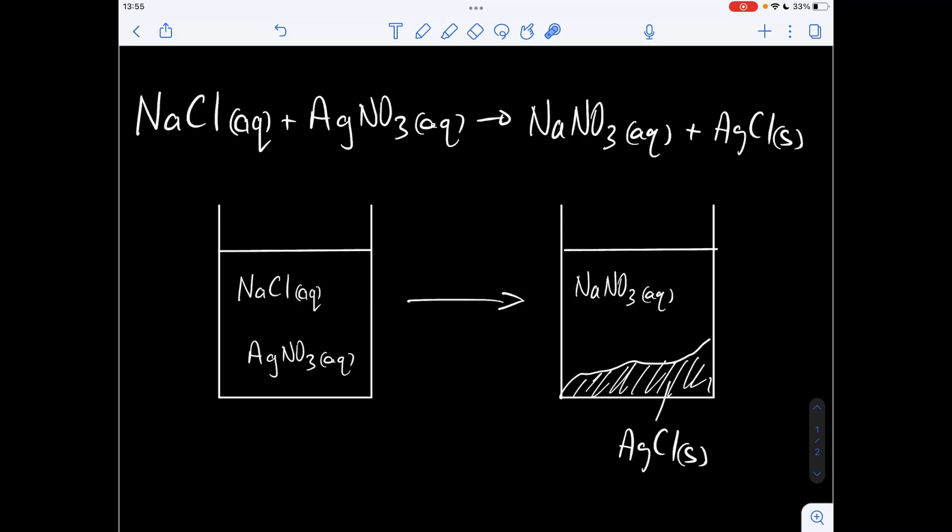Next thing I need to do is think about what will this actually be inside this beaker? Well it won't go around as sodium chloride bonded together. Because they're aqueous that means they're dissolved and so you're going to have separate sodium ions and separate chloride ions. Likewise silver nitrate, you're going to have separate silver ions, separate nitrate ions.